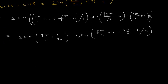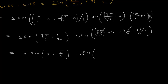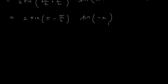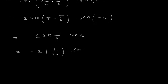Now 3 pi by 4 we write as pi minus pi by 4. Sin(pi minus pi by 4) is sin(pi by 4) — since sin(180 minus theta) is sin theta. Also sin(minus x) is minus sin x. So this is minus 2 sin(pi by 4) into sin x. The value of sin(pi by 4) is 1 upon root 2. So minus 2 into 1 upon root 2 into sin x gives minus root 2 sin x, which is the right hand side.